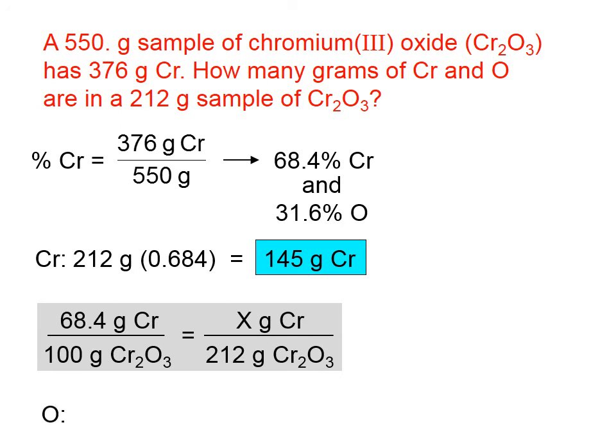The amount of oxygen must be the rest. If the total sample mass is 212 and 145 grams are chromium, then the other 67 grams must be oxygen.